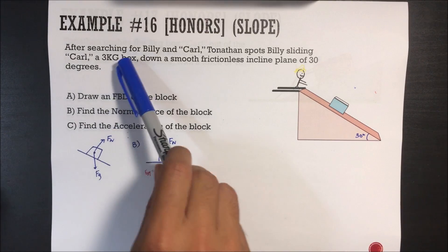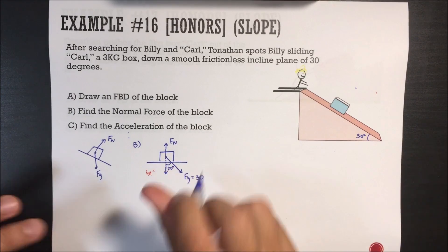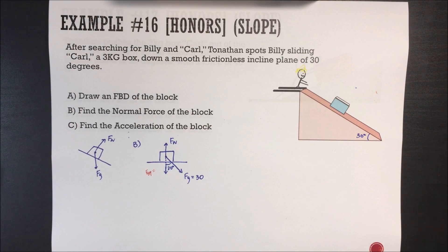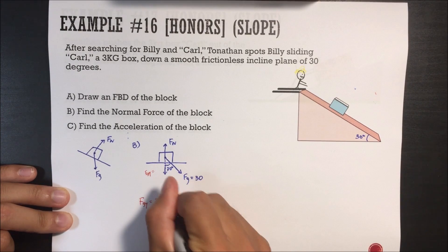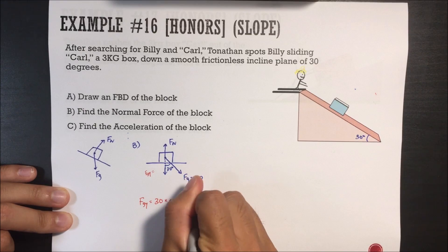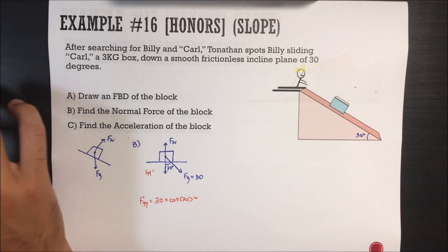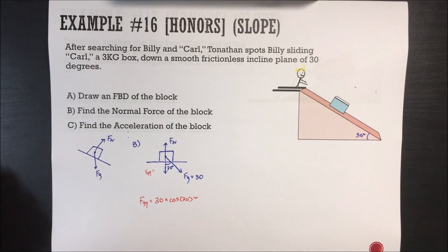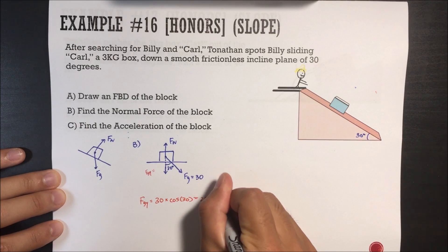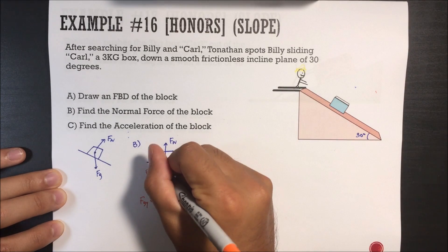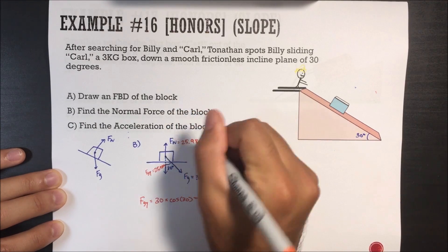The force of gravity is just 3 times 10, so this is going to be 30 newtons. The force of gravity in the y direction is going to be equal to 30 times cosine of 30, which equals 25.98 newtons. So if this is 25.98 newtons, that means the normal force is also 25.98 newtons.